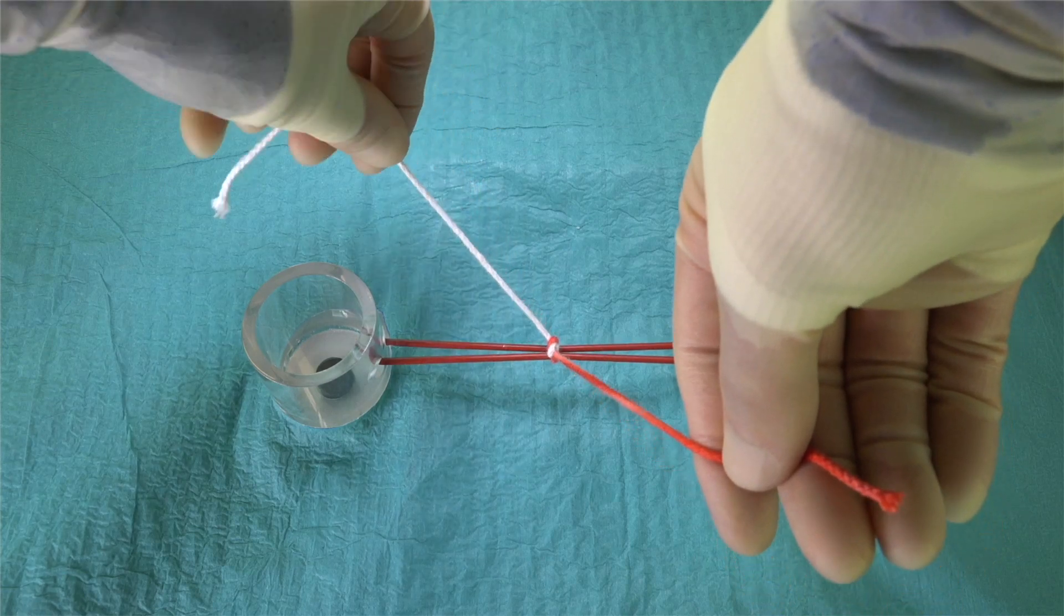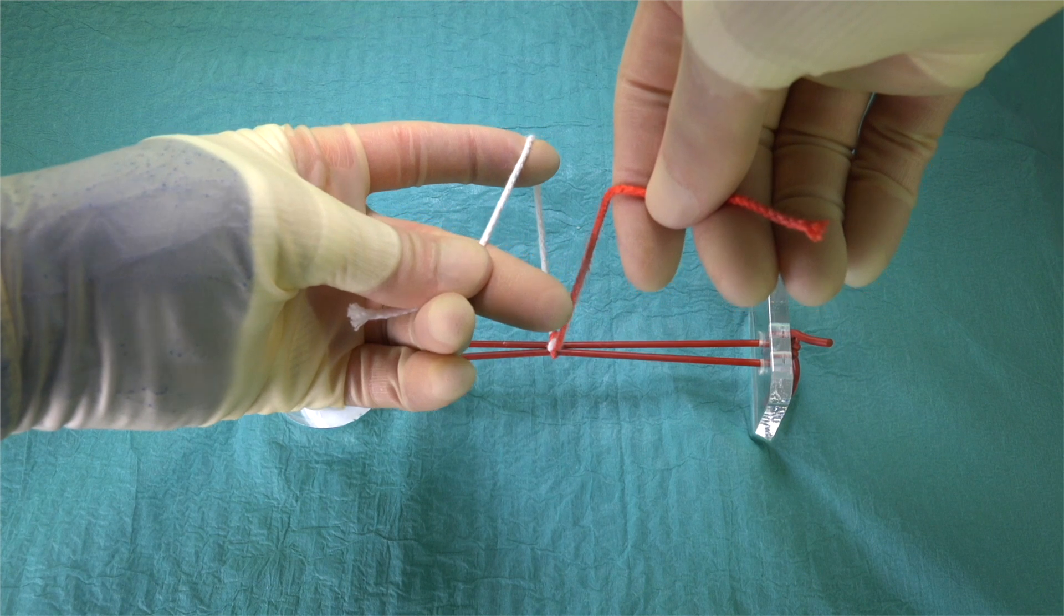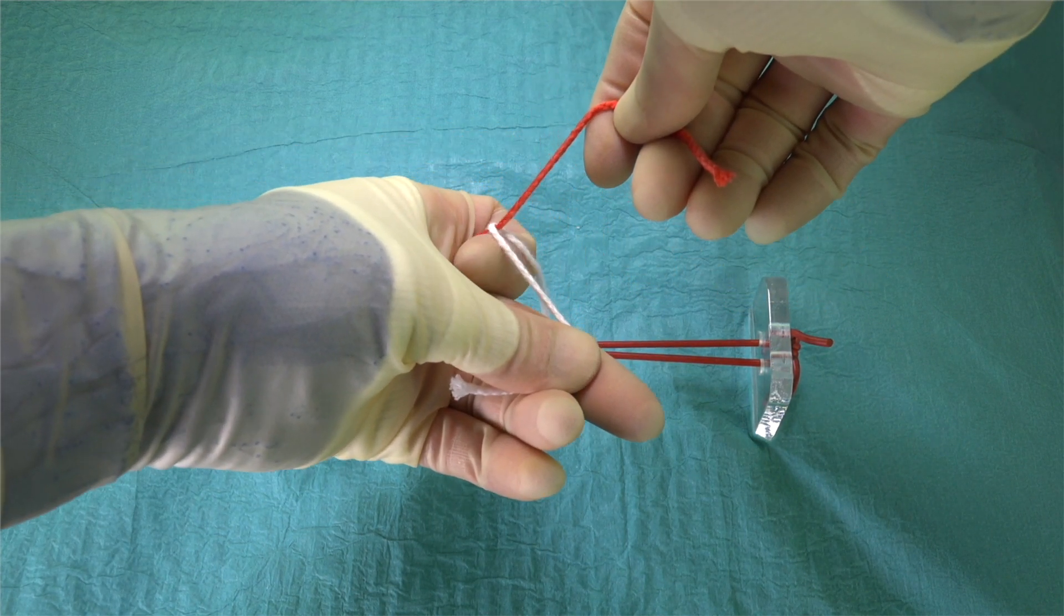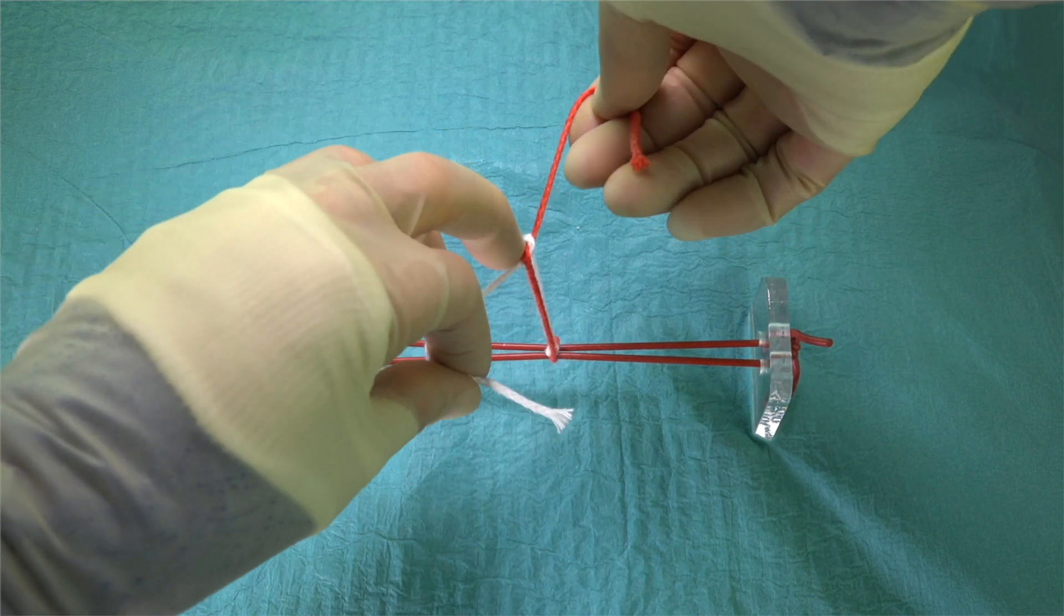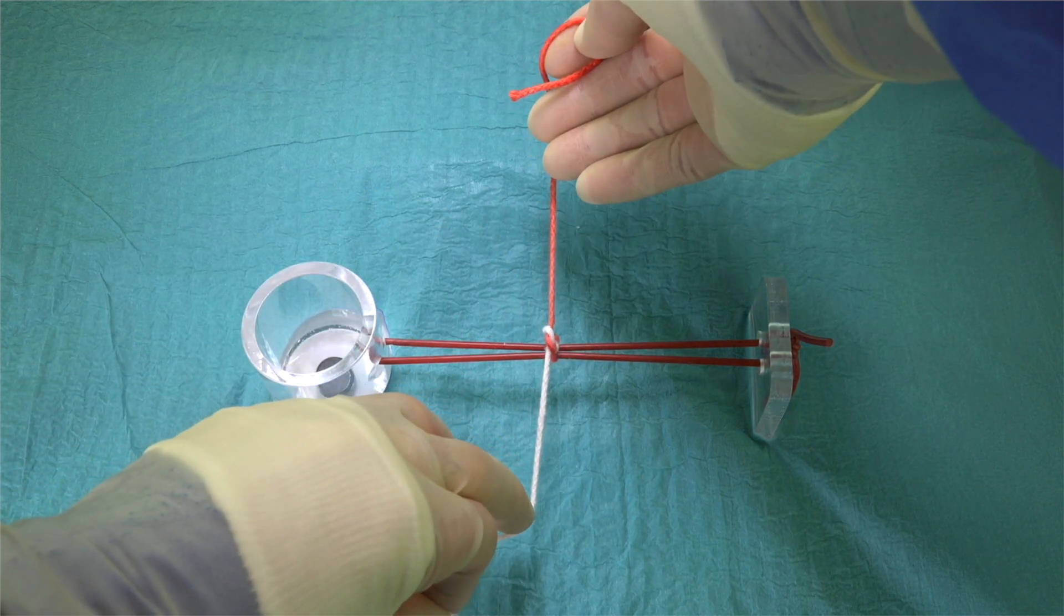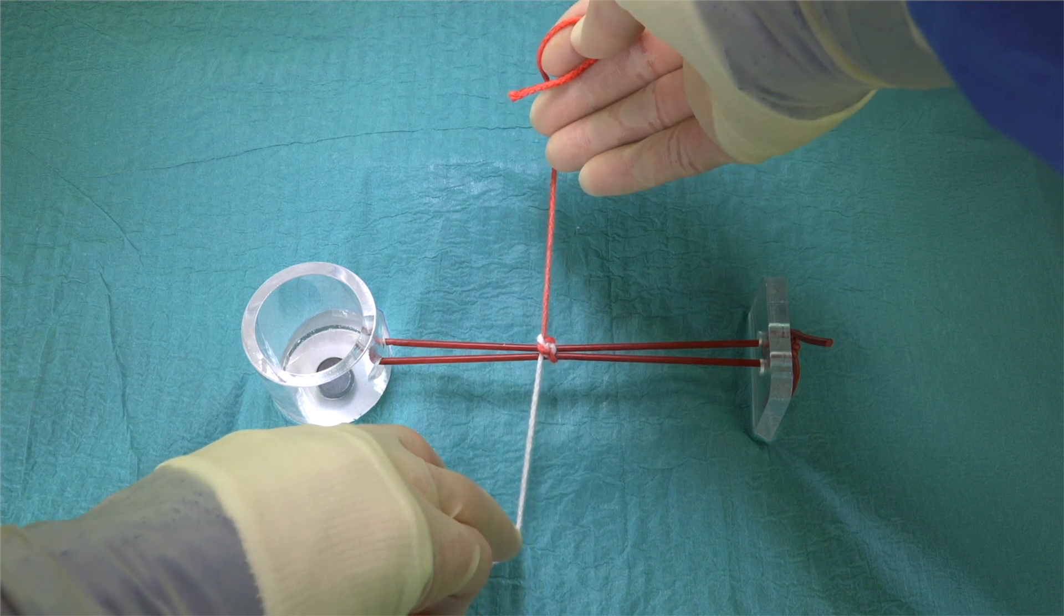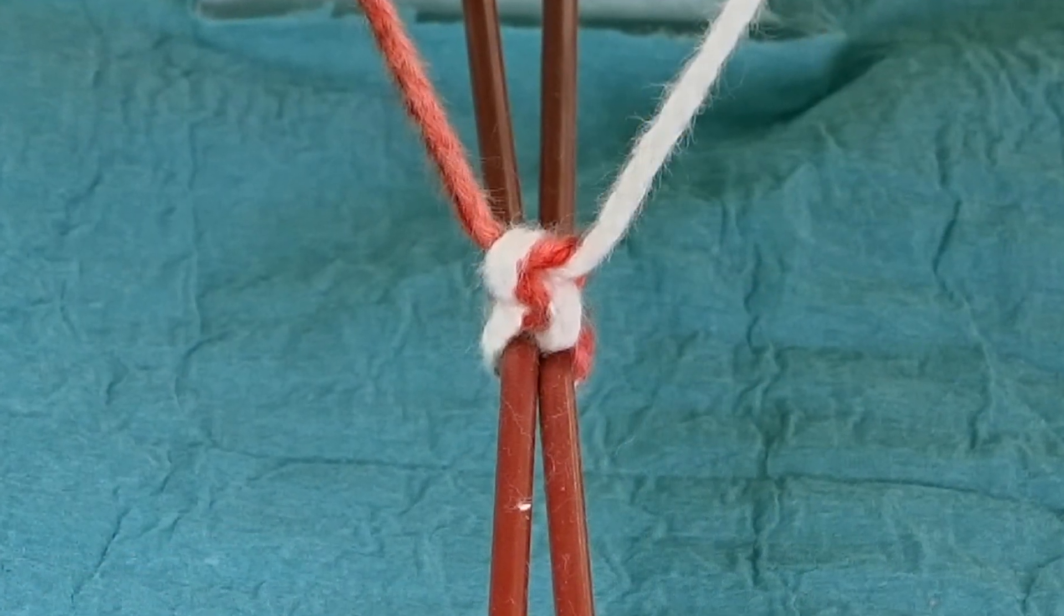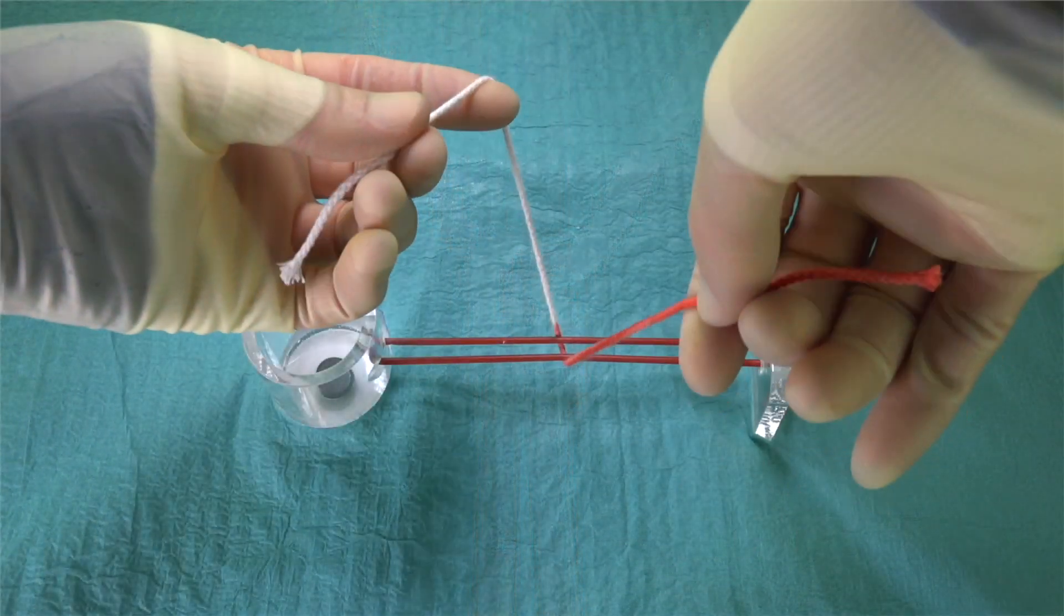Whilst the reef knot only consists of two throws, for added security we perform at least one more throw. The first position and the actions of the initial throw are repeated to perform the third and in this case the final throw. As many additional throws can be added as required by repeating the actions of the first and the second positions. The number of additional throws required is dependent on the type of suture material being used, with a greater number of throws being required when using the more slippy monofilament sutures as opposed to braided sutures.